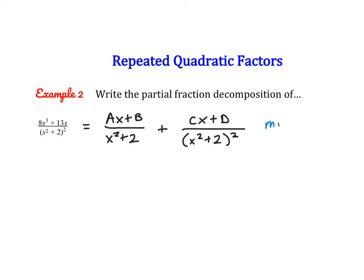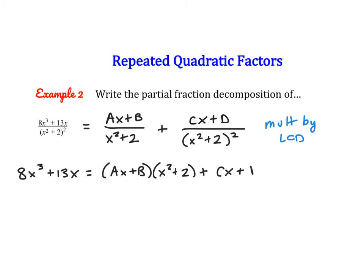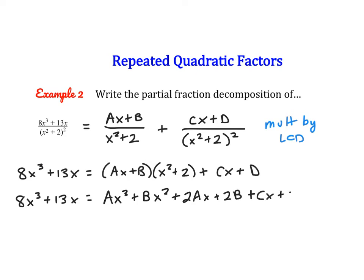From here we use the same approach as the last problem. We multiply both sides by the LCD, which is x squared plus 2 squared. The left-hand side becomes 8x cubed plus 13x. The right-hand side becomes ax plus b times x squared plus 2, plus cx plus d. Now we put the right side in descending order by multiplying it out. Multiplying out gives ax cubed plus bx squared plus 2ax plus 2b, plus cx plus d.